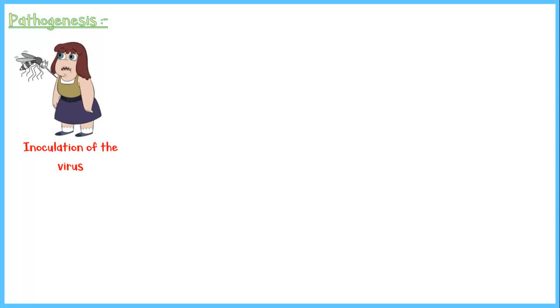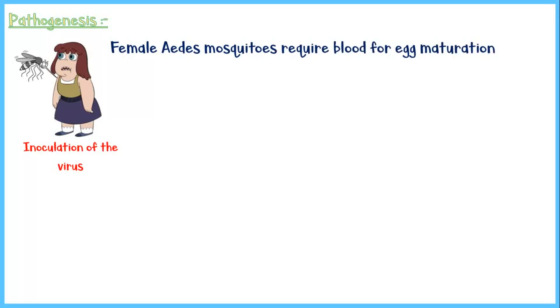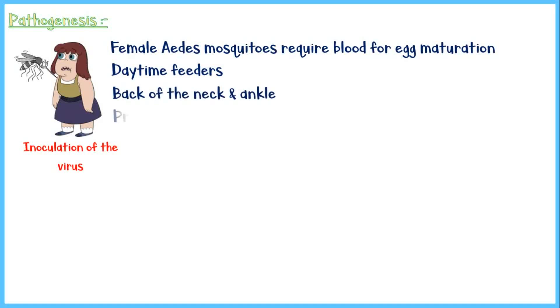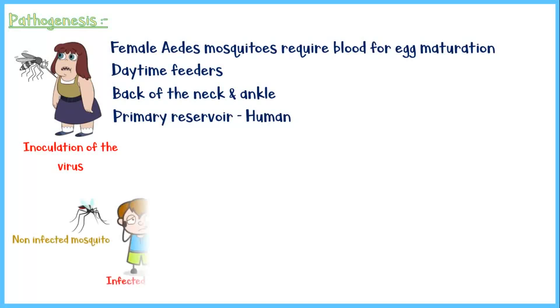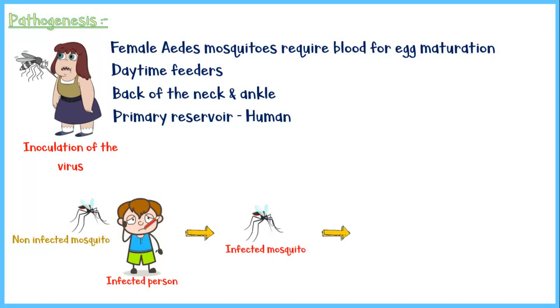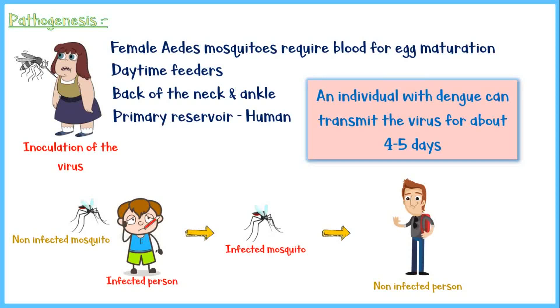Pathogenesis of dengue infection begins when an infected female Aedes mosquito bites a person for a blood meal, inoculating the virus into the blood. These mosquitoes require blood for egg maturation, are daytime feeders, and usually bite on the back of the neck and ankle area. The primary reservoir of the virus is human. When an infected person is bitten by a non-infected mosquito, the virus is transmitted, and that mosquito becomes infected. When it bites another person, that person also becomes infected — the main method of viral transmission. Hospitalized patients are advised to stay within bed nets, as an individual with dengue can transmit the disease for about four to five days.